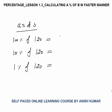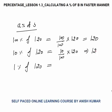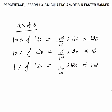Now 100 percent means divided by 100 — 100 by 100 into 120 that will be 120. 100 percent of a number is the number itself. 10 percent means 10 by 100, or 1 tenth of the number, that will be 12. 1 percent means 1 by 100 into 120, that is 1.2. 1 percent means you have to divide the number by 100 — 120 by 100 is 1.2.